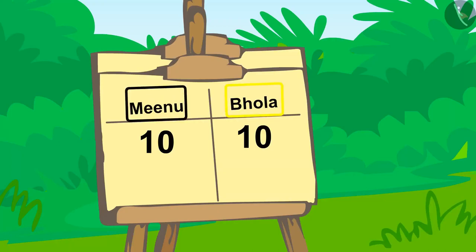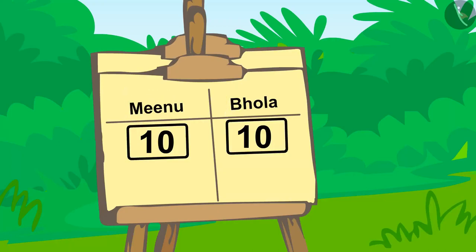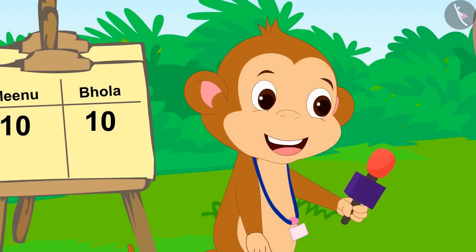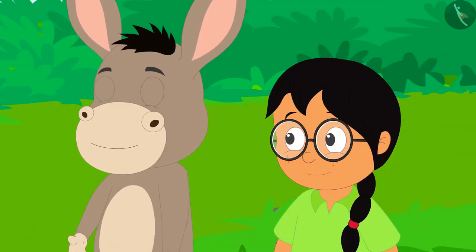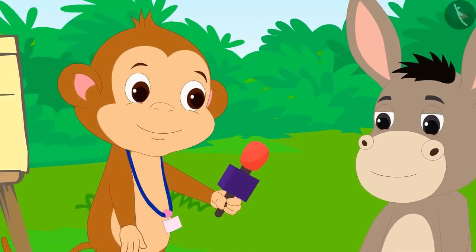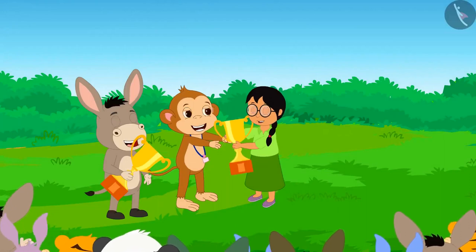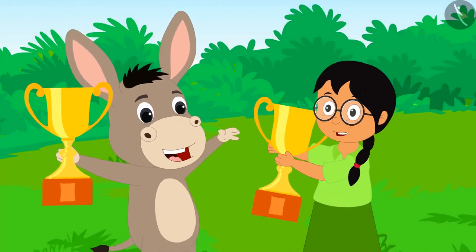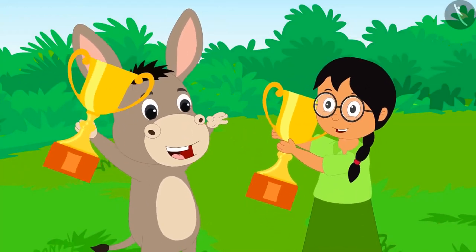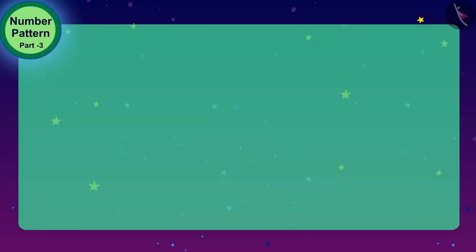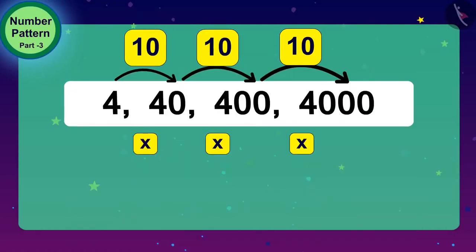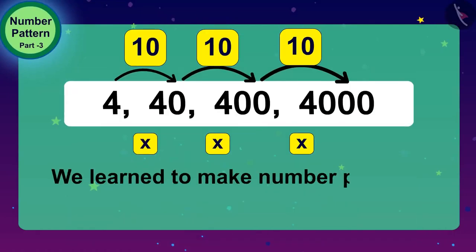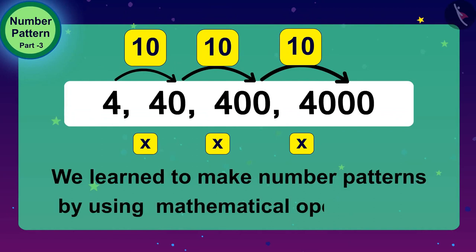Minu and Bhoala scored equal points. Babban declared both Bhoala and Minu the winners of the competition and gave them the winning trophy. Everyone in the audience is clapping and Bhoala and Minu are happily dancing. Children, in this video, we learned to make number patterns by using some more mathematical operations.